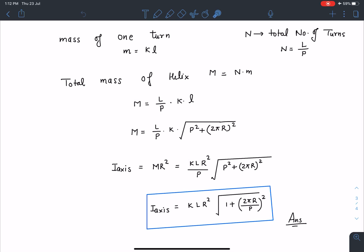I'll take this P inside and it's going to give me KLR² × √(1 + (2πR/P)²). Okay, so this is going to be the answer for this problem and it's a very simple problem.